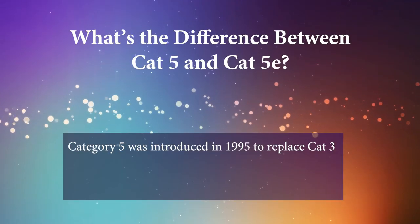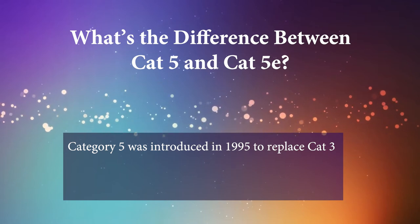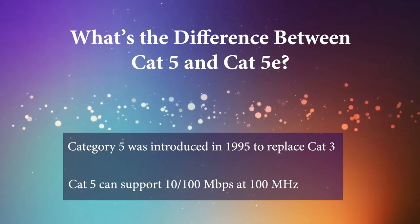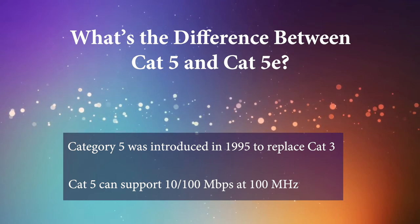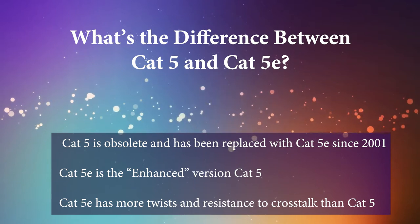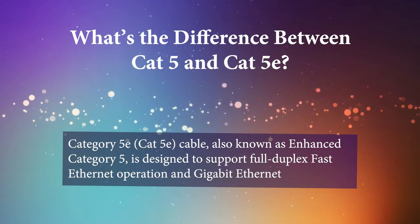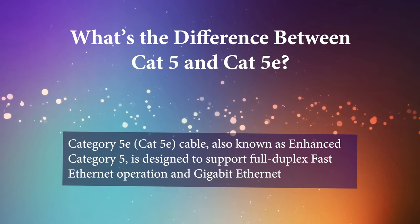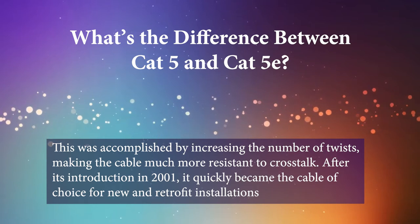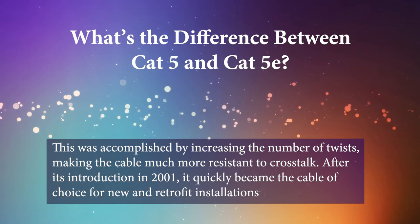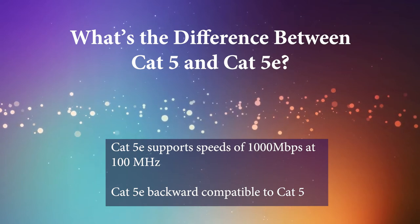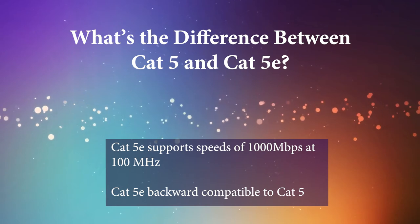Category 5 was introduced in 1995 and is the successor to Cat 3. Cat 5 was the first cable to be dual rated at 10/100 megabits per second, with a bandwidth of 100 megahertz, and can distribute video and telephone signals at distances of 100 meters or 328 feet. Although Cat 5 and Cat 5E cables are physically similar, Category 5E follows a stricter IEEE standard. Category 5E, also known as Enhanced Category 5, is designed to support full-duplex fast Ethernet and Gigabit Ethernet, accomplished by increasing the number of twists to make the cable more resistant to crosstalk. After its introduction in 2001, it quickly became the cable of choice for new and retrofit installations. Category 5E can support speeds up to 1000 megabits per second, or 1 gigabit, with a bandwidth of 100 megahertz, and is backward compatible to Cat 5.